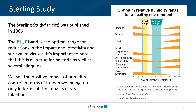The 40-60% RH range has been an industry standard since 1986 with the publication of the Sterling study. The blue band in the chart is the optimal range for reductions in the impact of infectivity and survival of viruses. It's important to note that this is also true for bacteria as well as a number of allergens. We see the positive impact of humidity control in terms of human well-being, not only in terms of viral infection, but also chemical interactions and ozone protection.